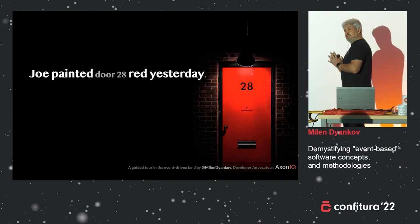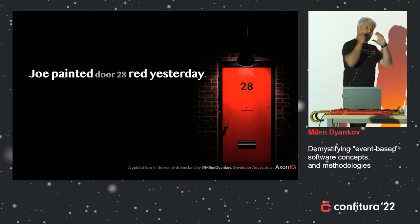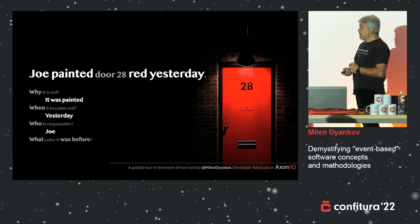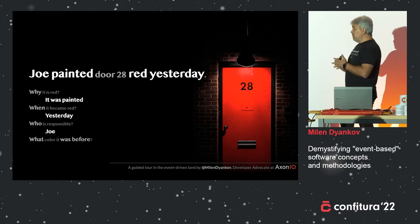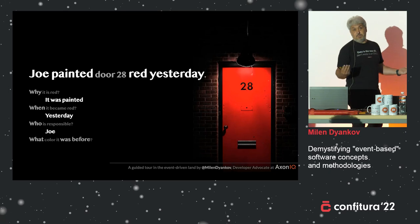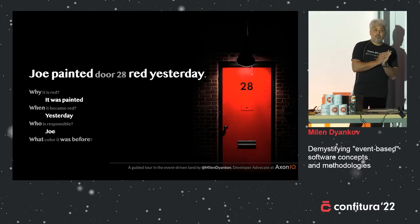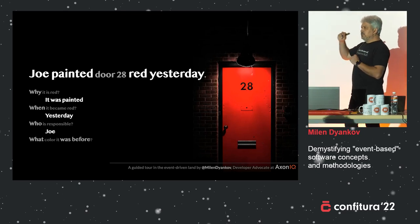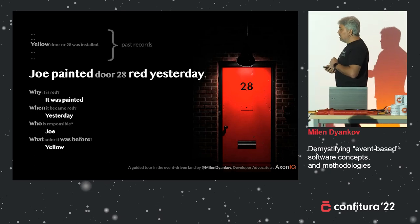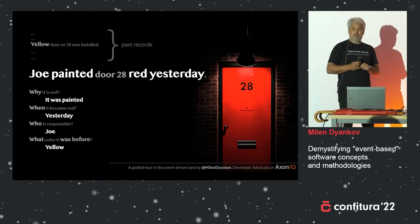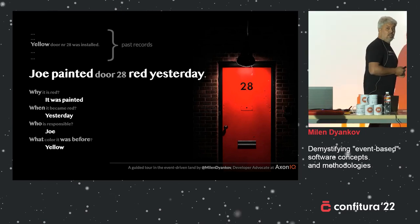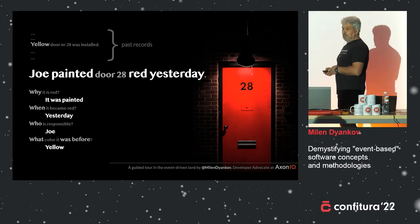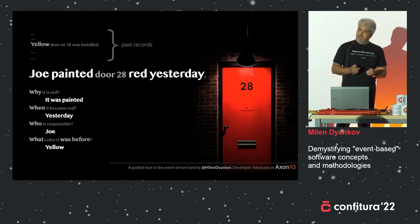But what if you store data differently? What if you store an event — a fact that something has changed? Such as: Joe painted door 28 in red yesterday. If you store that information this way, you can immediately answer those questions. Why is it red? Because it was painted. Who did it? Joe. When? Yesterday. You may have a problem answering what color it was before, but if your storage is suited for storing changes and not states, you can go back in history and find an event saying a yellow door 28 was installed. Since there are no other events between those two, you can conclude the color before red was yellow.